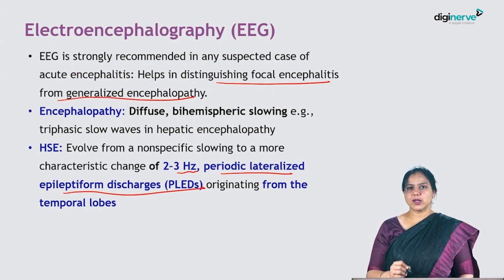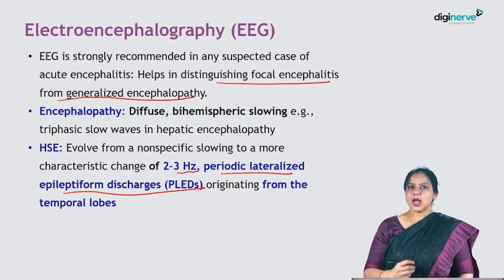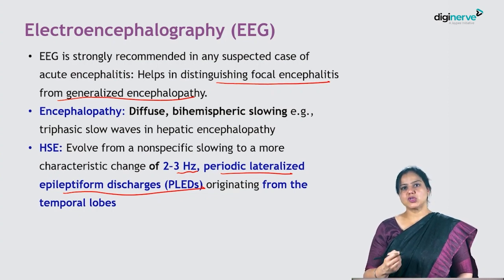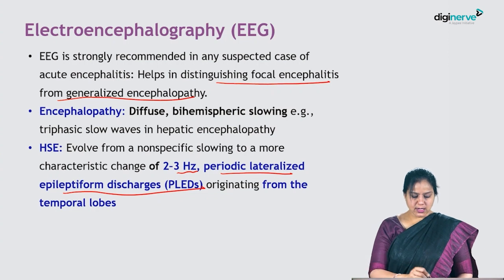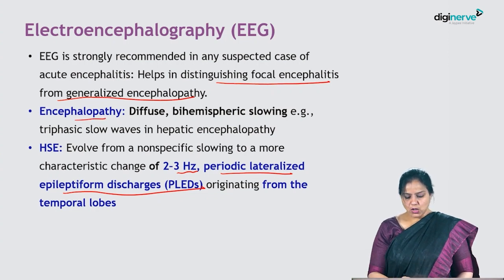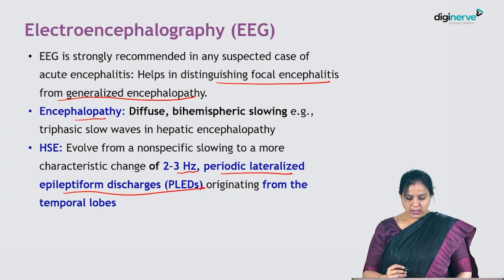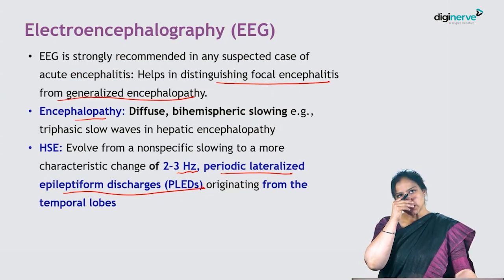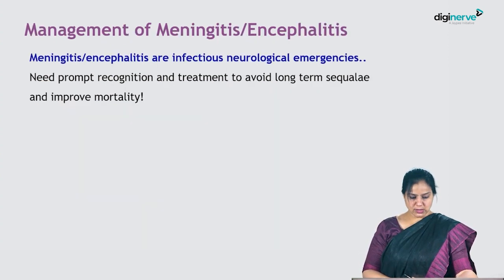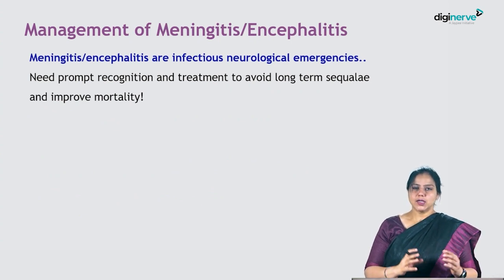In HSV encephalitis, EEG shows 2–3 Hz periodic lateralized epileptiform discharges originating from the temporal lobes, reflecting the frontotemporal involvement of viral encephalitis. This contrasts with generalized encephalopathy, which shows diffuse bihemispheric slowing such as the triphasic slow waves seen in hepatic encephalopathy.